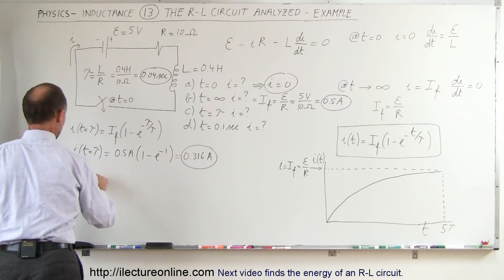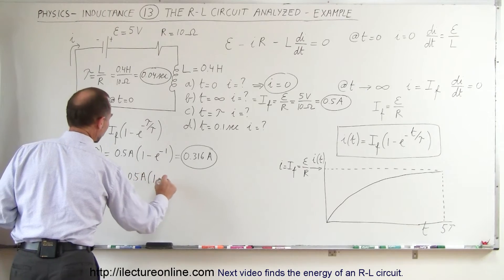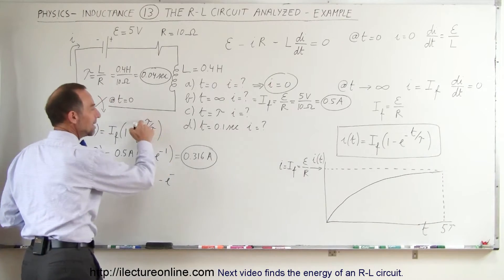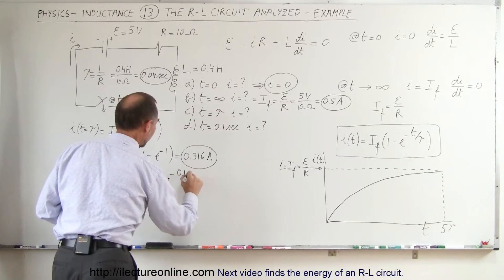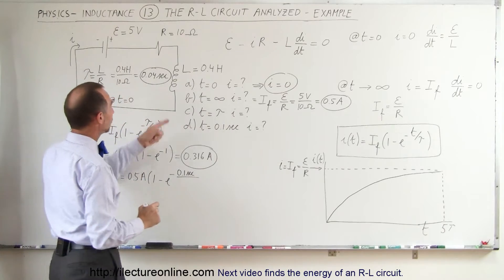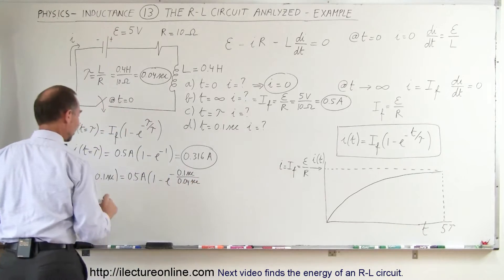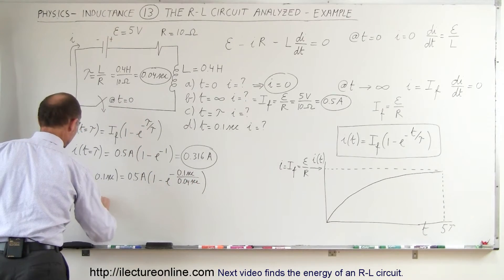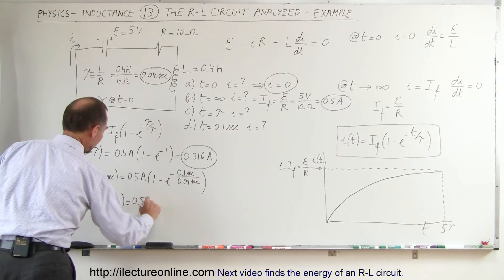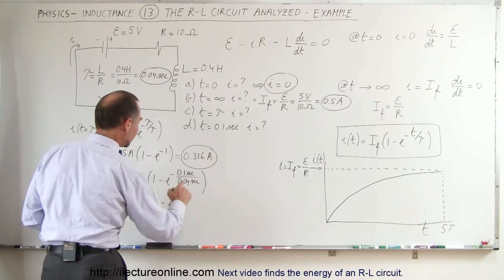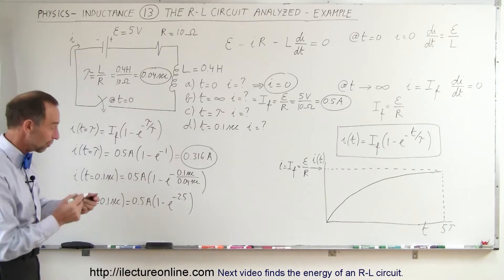So I, when T is equal to 0.1 seconds, is equal to 0.5 amps times 1 minus E to the minus T. Now instead of tau, we're going to write the actual time that we were given, 0.1 seconds, divided by tau, and tau we know is 0.04 seconds. In other words, this then becomes I, when time is equal to 0.1 seconds, is equal to 0.5 amps times 1 minus E to the minus. That would be 2.5 power, because 0.1 divided by 0.04 is 2.5.